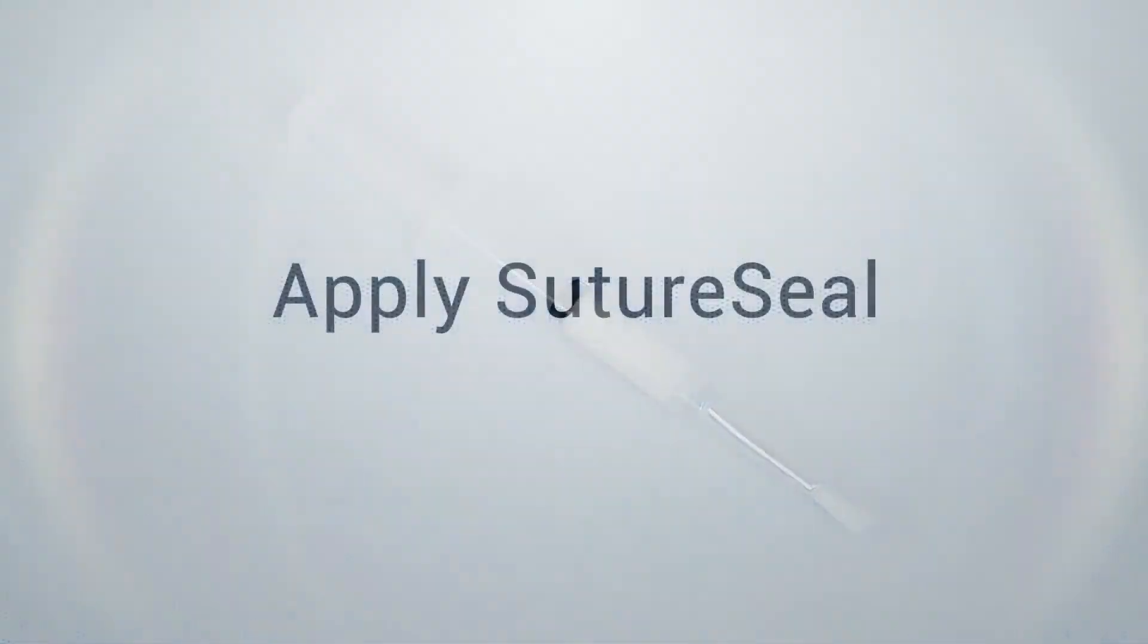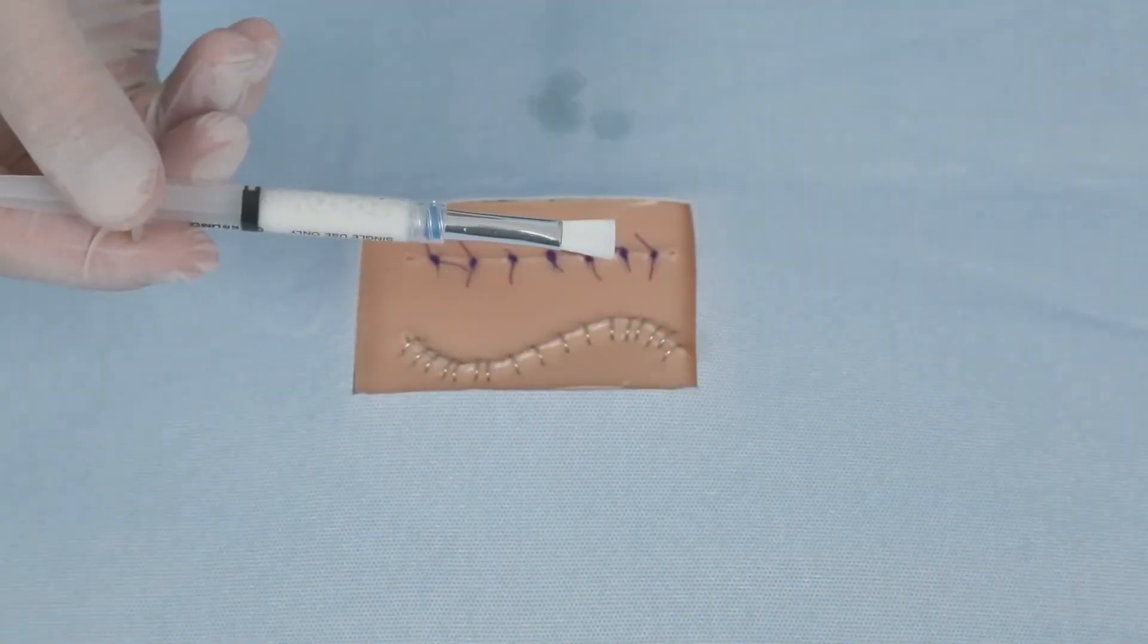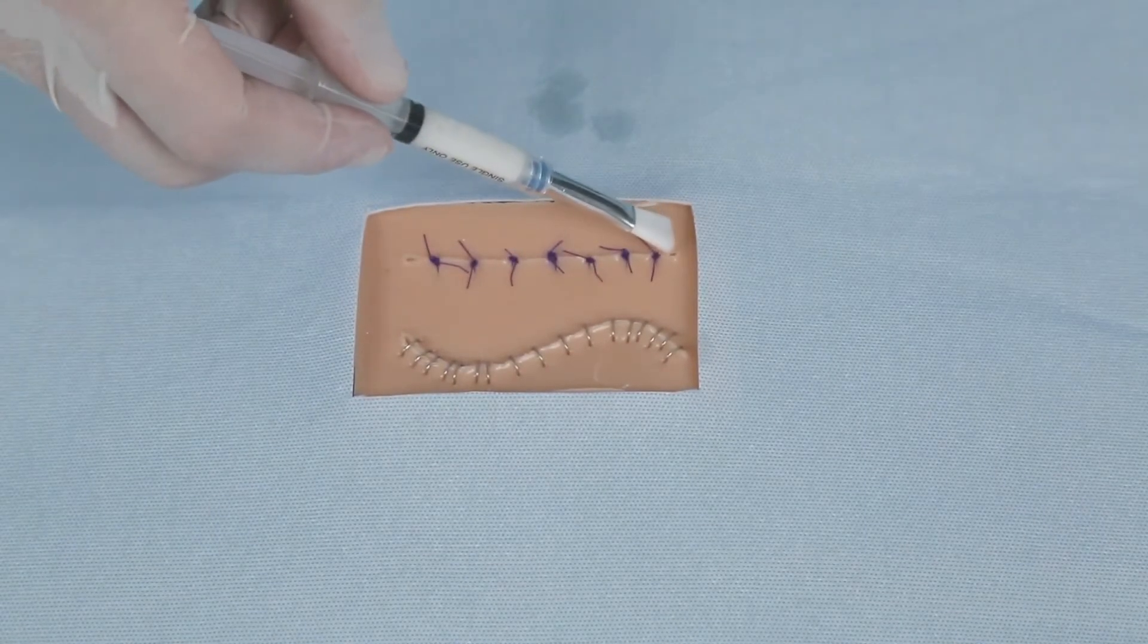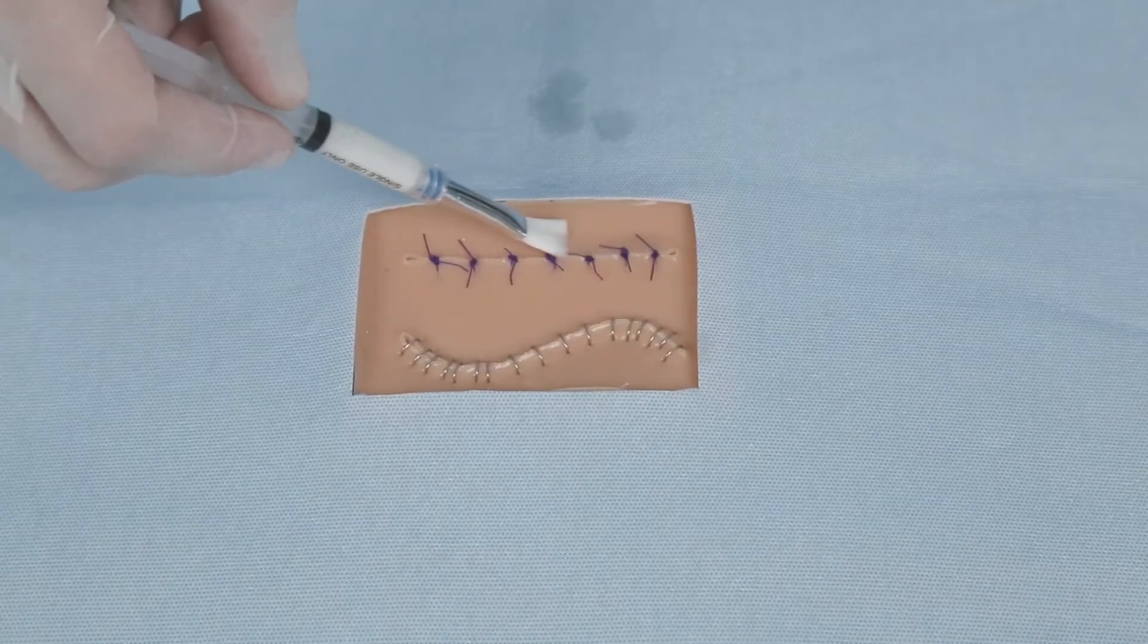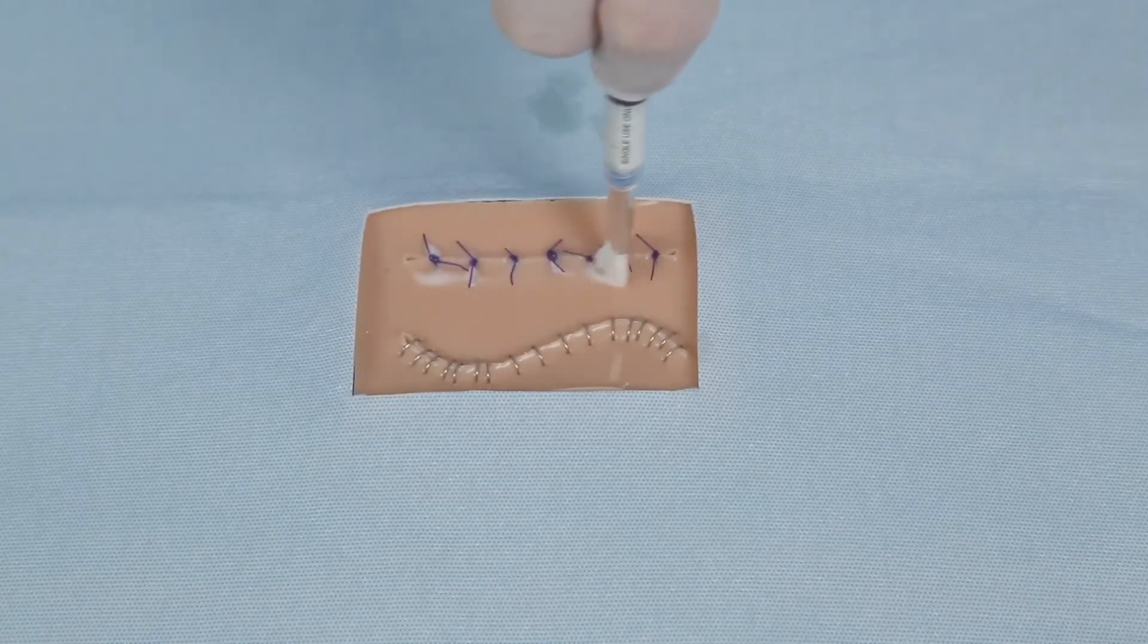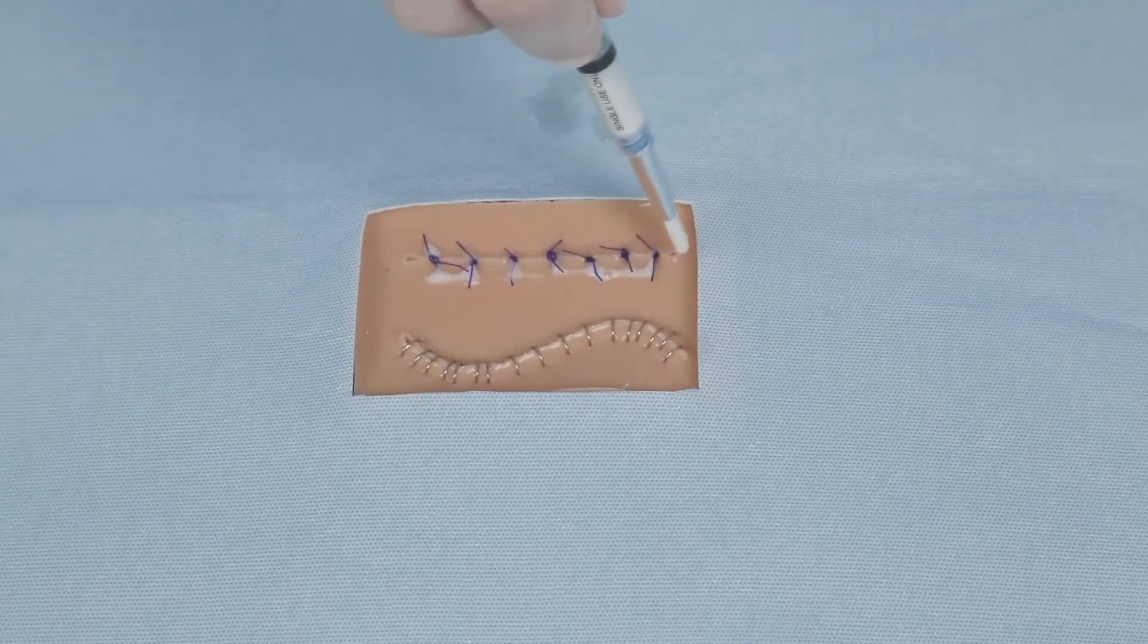The last step is to apply SutureSeal to the affected area. SutureSeal can be applied to incisions with sutures or staples and many types of open wounds. It is important to note that after the products are mixed you have approximately 80 to 120 seconds to apply SutureSeal to the incision or wound before it gels into a clear flexible sealant.